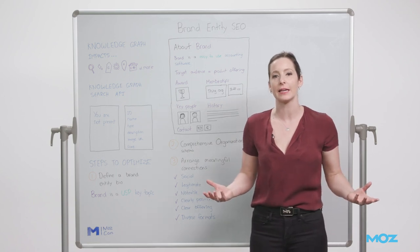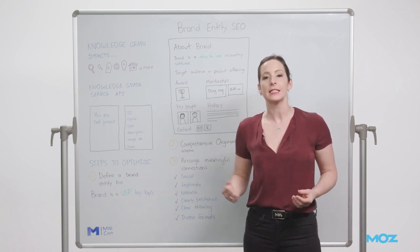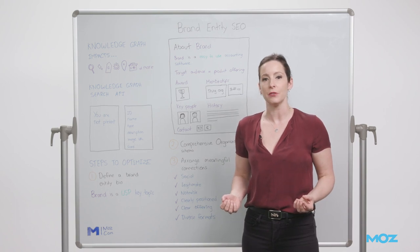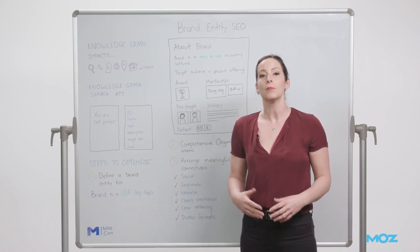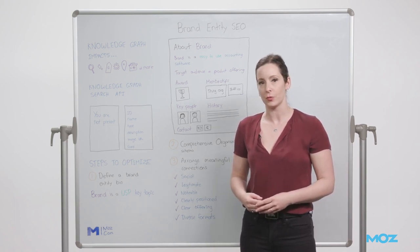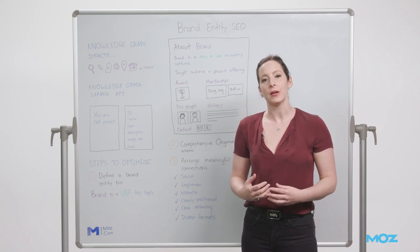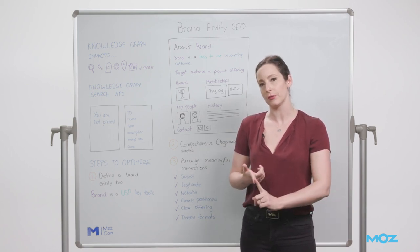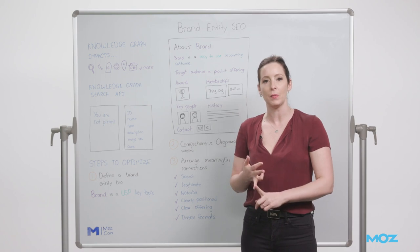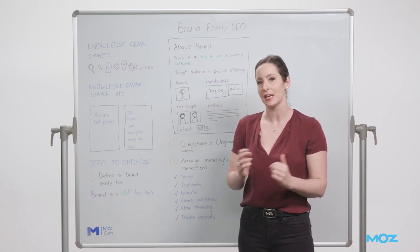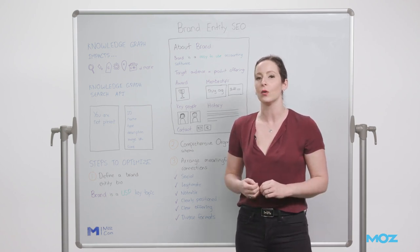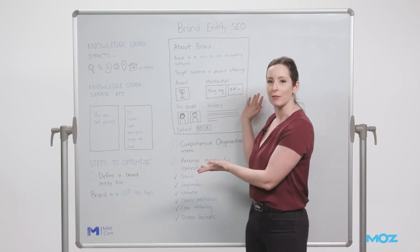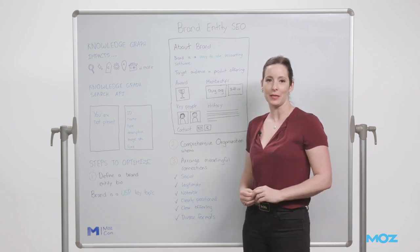This gives you outcomes like: brand is Seattle's family-friendly gym, or brand is a landing page builder for marketers, or brand is easy-to-use accounting software. Then elaborate on the brand bio to address your target audience, core offerings, awards and membership, key people or partners, history, contact details, and where relevant, editorial or ethics policies. And there is your Knowledge Graph-optimized About Us page copy.